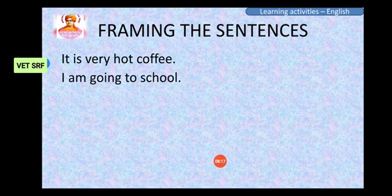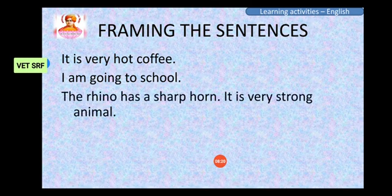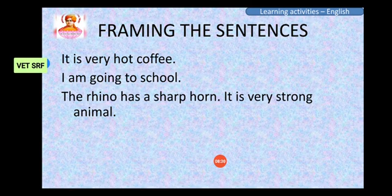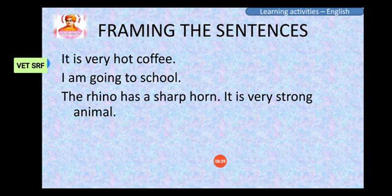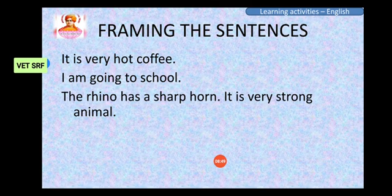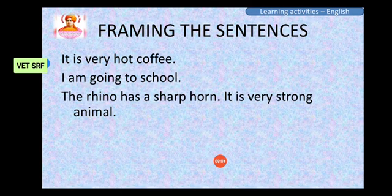'I am going to school. The rhino has a sharp horn. It is a very strong animal.' The rhino is a common noun. Has is a verb. An is an article. Sharp is an adjective. Horn is a noun. Next: 'It is a very strong animal.' It is a pronoun. Is is a verb. Very strong is an adjective. Animal is a common noun.